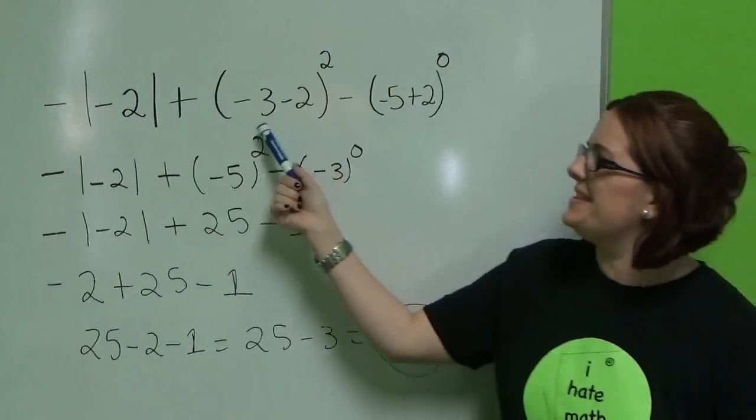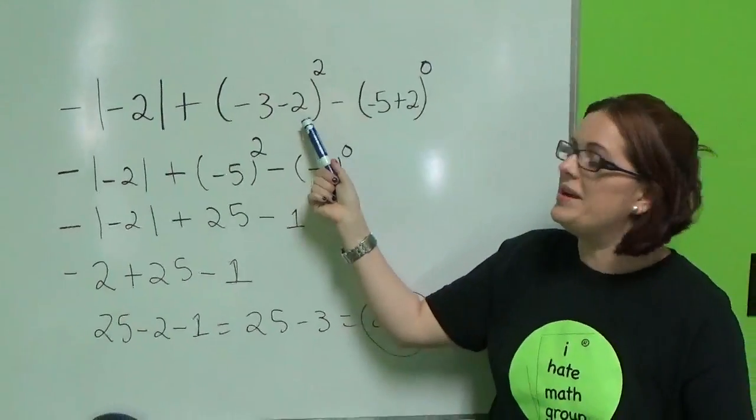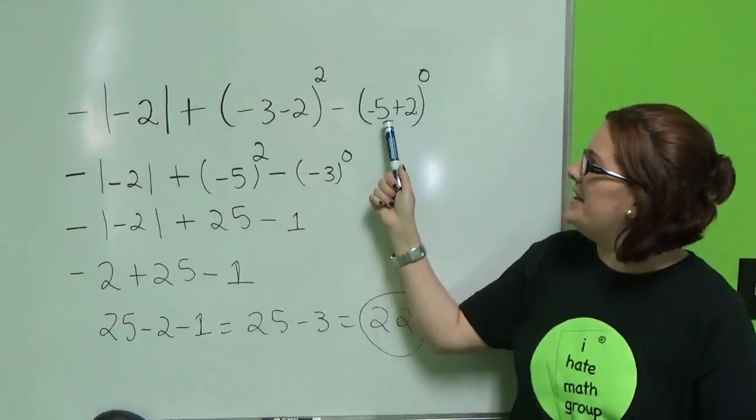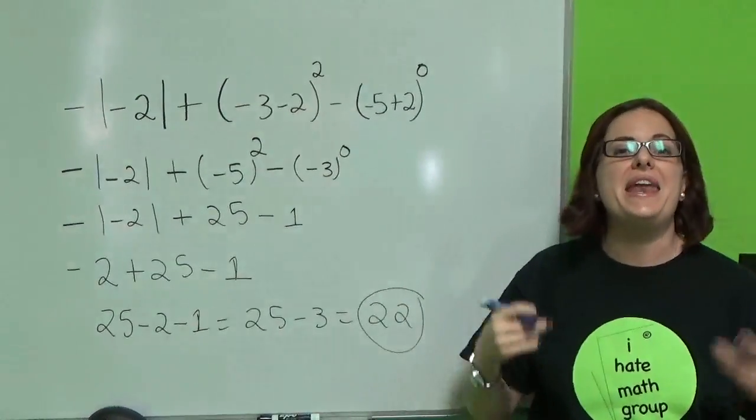Let's start with the parenthesis. Look at this. Negative 3 minus 2 is negative 5 because you have equal signs. Negative 5 here. Negative 5 plus 2 is negative 3.